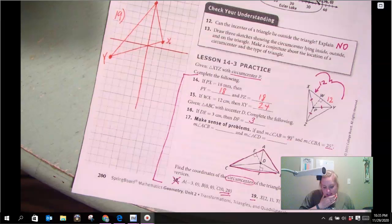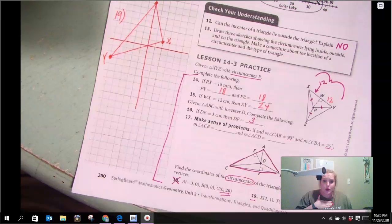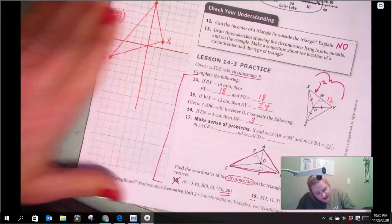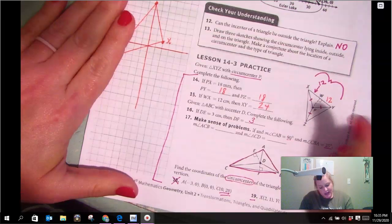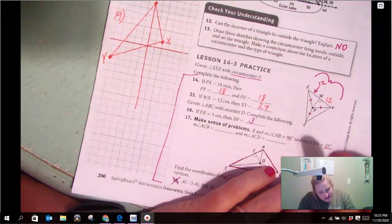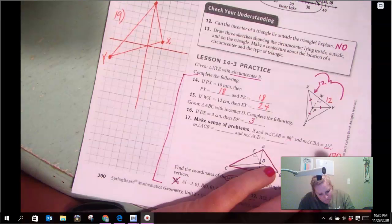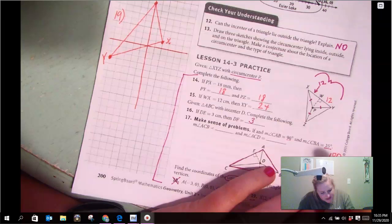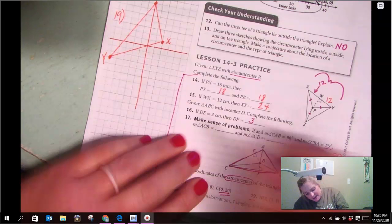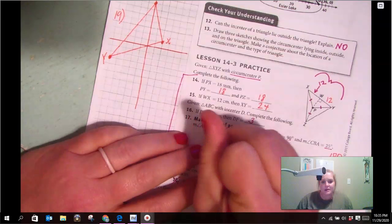We already did 16, so now 17 is talking about the angles. So remember, every triangle has 180 degrees, so we're going to take away 90. That leaves us with 90, and then we take away 25, which equals 65. So that angle is going to be 65 degrees.